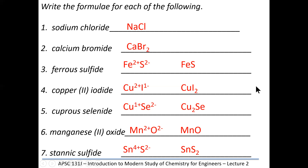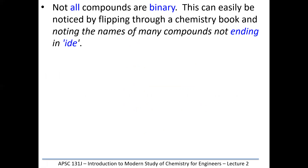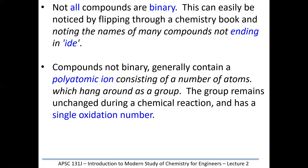Not all compounds are binary. I'm now going to teach you a system that deals with compounds that don't end in 'ide' — the ones that end in 'ate' and 'ite'. There are literally thousands of those compounds. To learn them, we need to learn all these polyatomic ions — names and formulas. Even though a polyatomic ion has more than one atom, the charge applies to the entire group, like phosphate PO₄³⁻ — the minus three applies to the entire PO₄ particle.